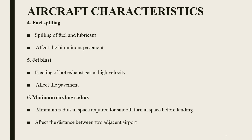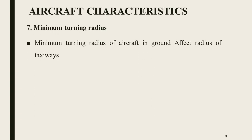Next, minimum circling radius — it's the minimum radius in space required for a smooth turn before landing, and it will affect the distance between two adjacent airports. Next, minimum turning radius — the minimum turning radius of an aircraft on the ground affects the radius of taxiway design.